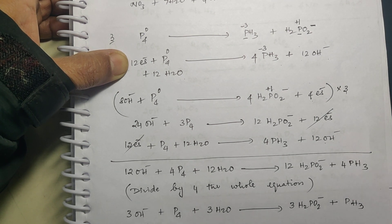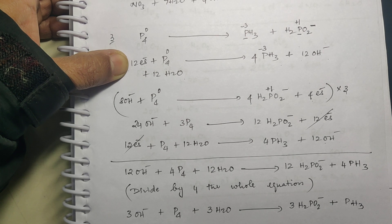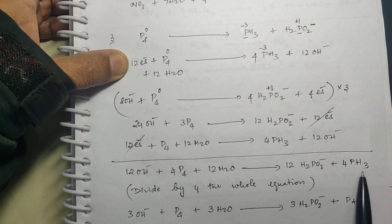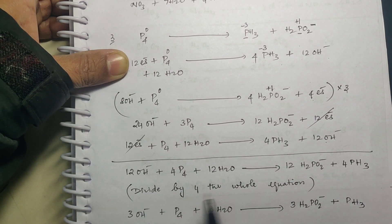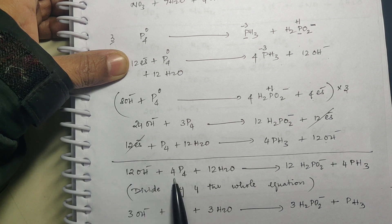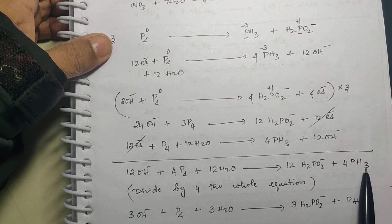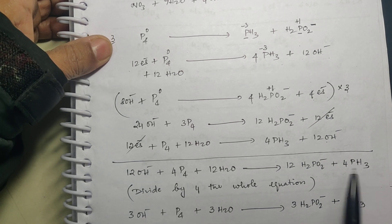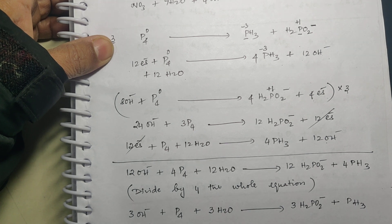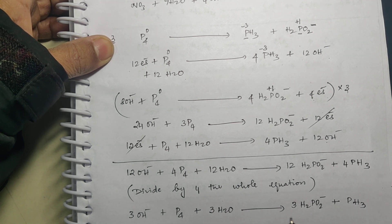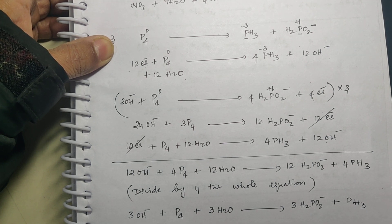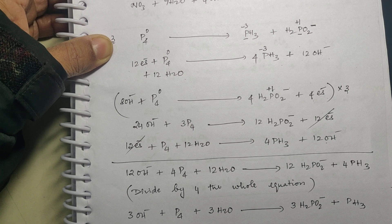After multiplying by 3 and combining both half-reactions, you will find that 4 is a common factor throughout the equation, so divide the whole equation by 4 and you will get the simplified final equation.